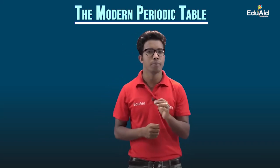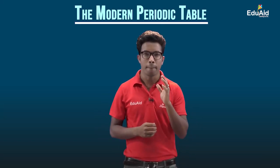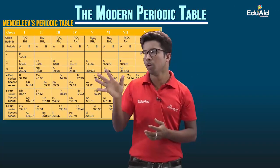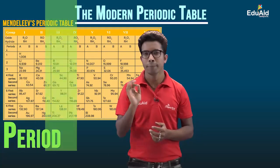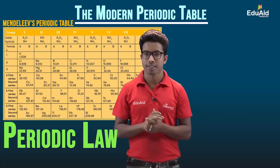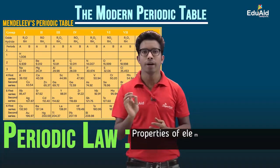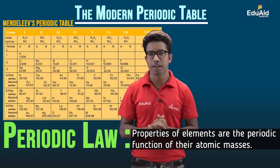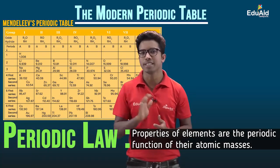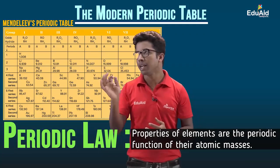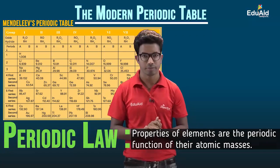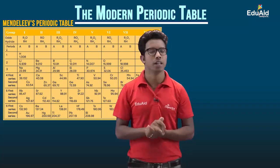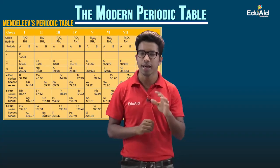In the last session, we talked about the achievements and limitations of Mendeleev's periodic table. This whole periodic table is based on a law called the periodic law, which states that the properties of an element are a periodic function of their atomic mass. That means with the change of atomic mass, the properties change. We also know there are certain limitations associated with Mendeleev's periodic table, which we discussed in the last session.